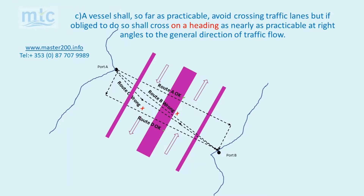Rule 10b3/b4. A vessel shall, so far as practicable, avoid crossing traffic lanes but, if obliged to do so, shall cross on a heading as nearly as practicable at right angles to the general direction of traffic flow. Routes A and D are correct as they are on a heading at right angles to the flow of traffic. Routes B and C are wrong as they are not on a heading at right angles to the flow of traffic.